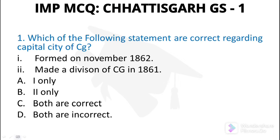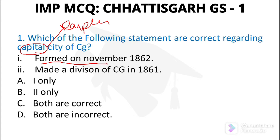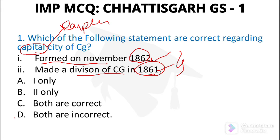Question number 1: Which of the following statements are correct regarding the capital city of Chhattisgarh? We are talking about Raipur. Statement 1 is: Formed on November 1862. And statement 2 is: Made a division of Chhattisgarh in 1861. Raipur was formed in 1861 and made a division in 1862, so both statements are not correct. Option number D will be the answer.